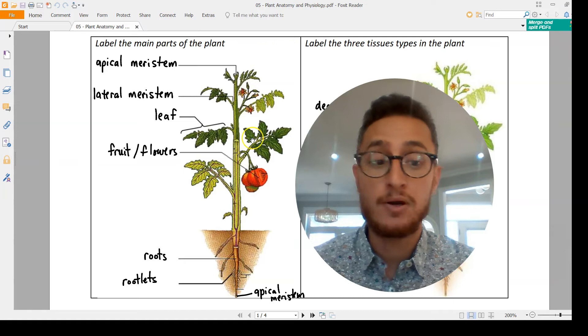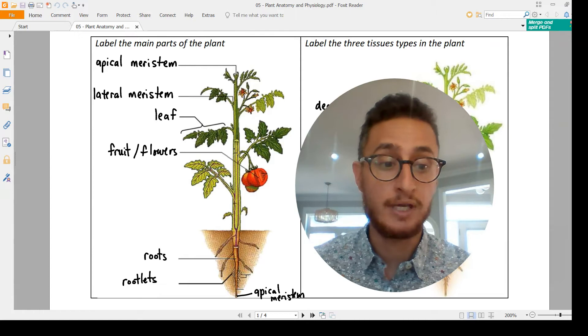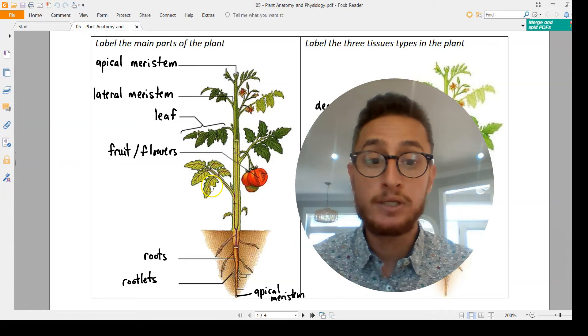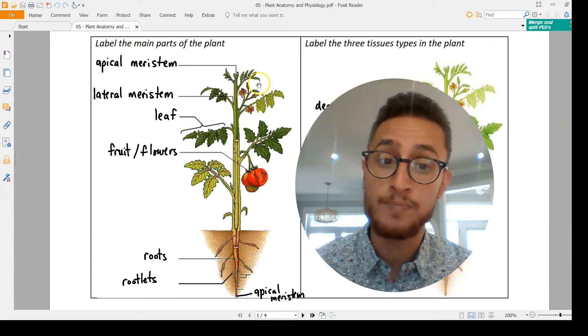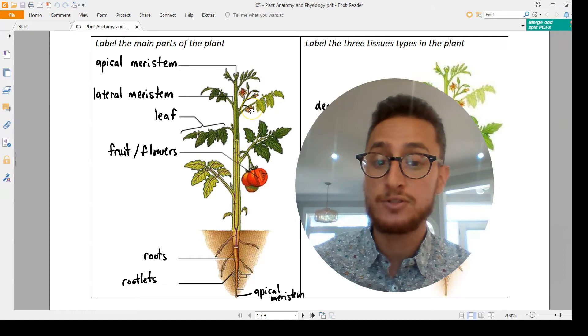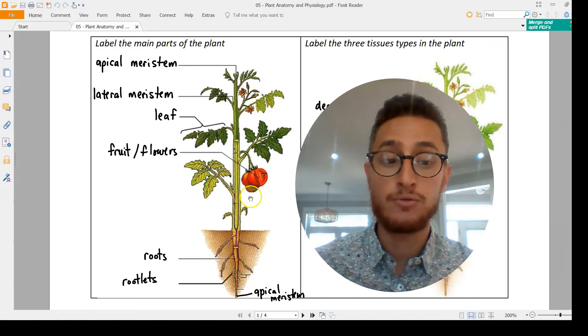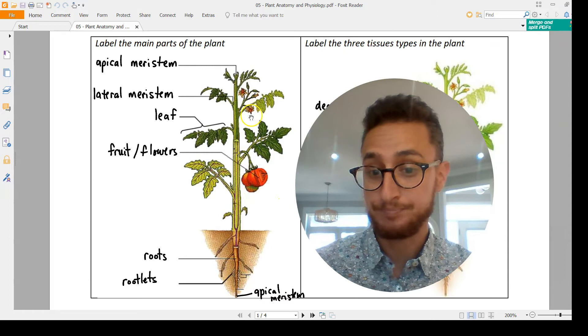Inside of those buds is essentially stem cells, these unspecialized cells that can turn into whatever tissues a plant needs. They're called meristems. And if you look around this plant, you'll find them everywhere. There are apical meristems at the very top or bottom, those are growing tips. And then you have lateral or axillary meristems at the base of every leaf and branch.